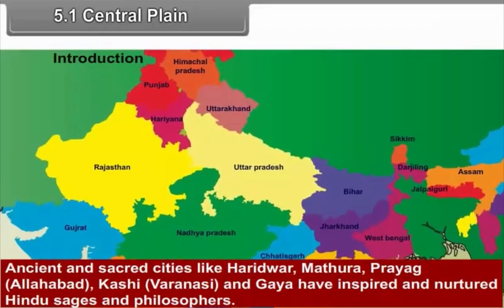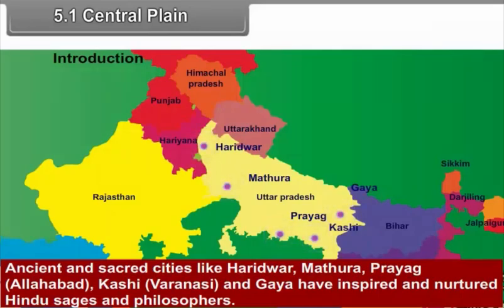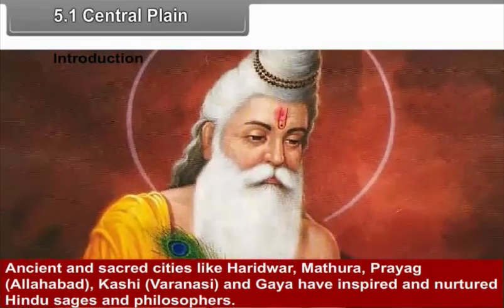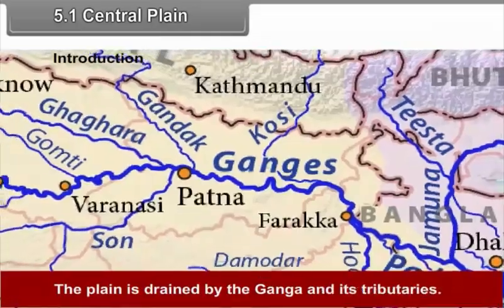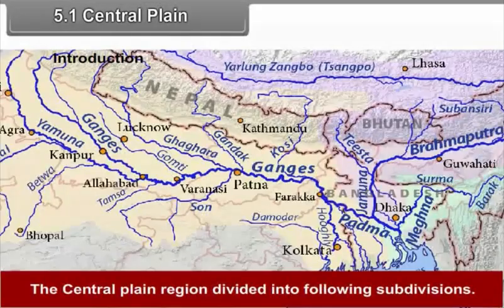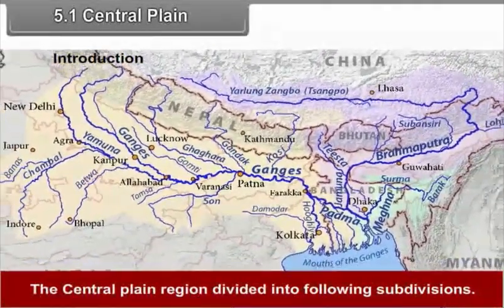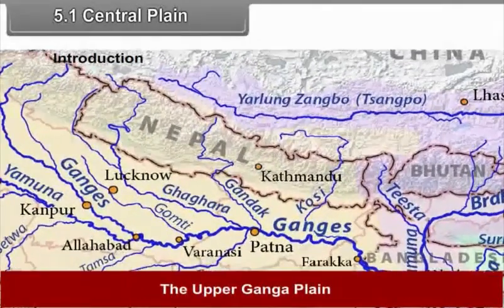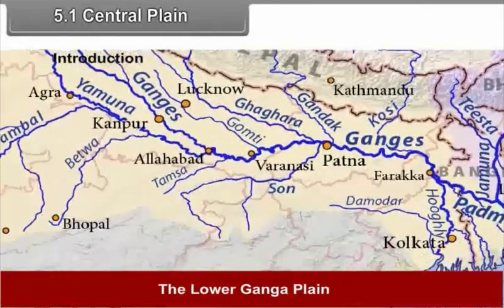Ancient and sacred cities like Haridwar, Mathura, Prayag, Kashi and Gaya have inspired and nurtured Hindu sages and philosophers. The plain is drained by the Ganga and its tributaries. The central plain region is divided into the following subdivisions: the upper Ganga plain, the middle Ganga plain, and the lower Ganga plain.